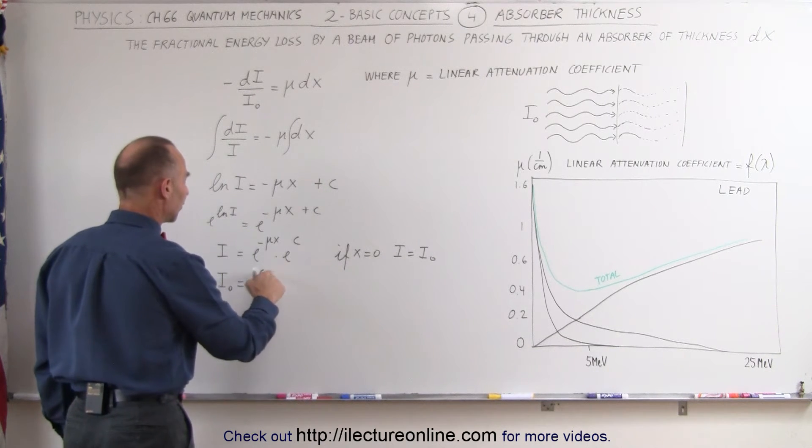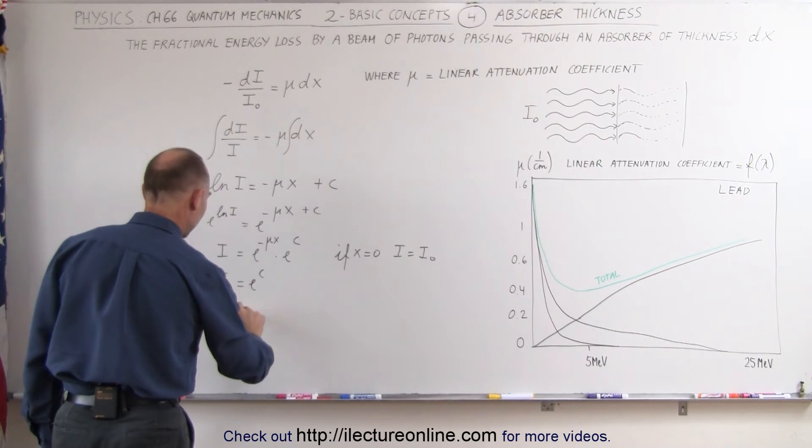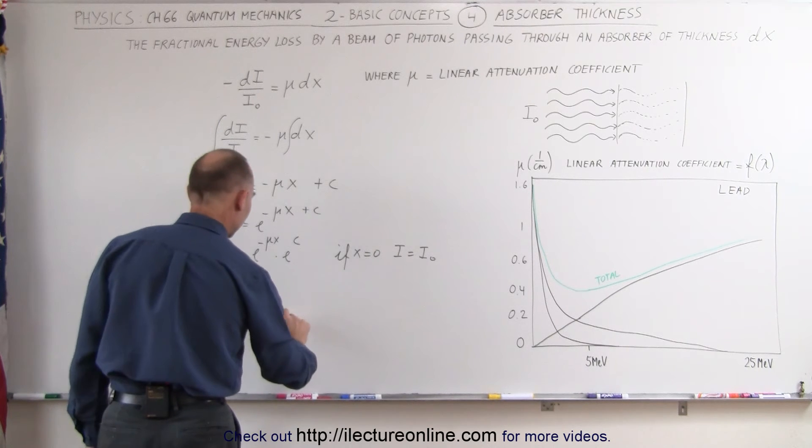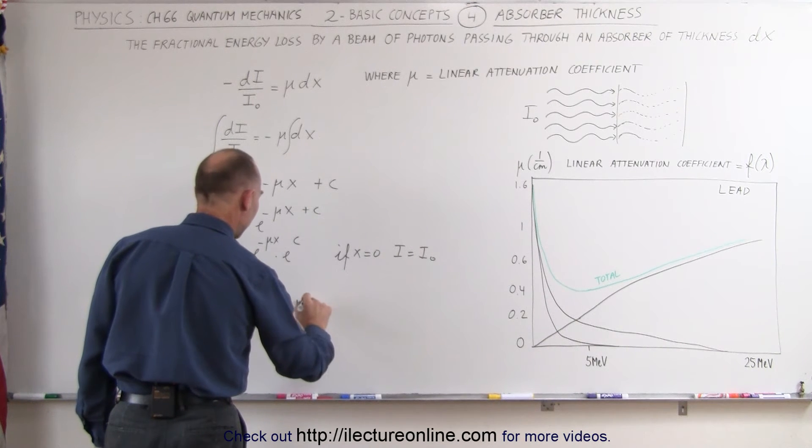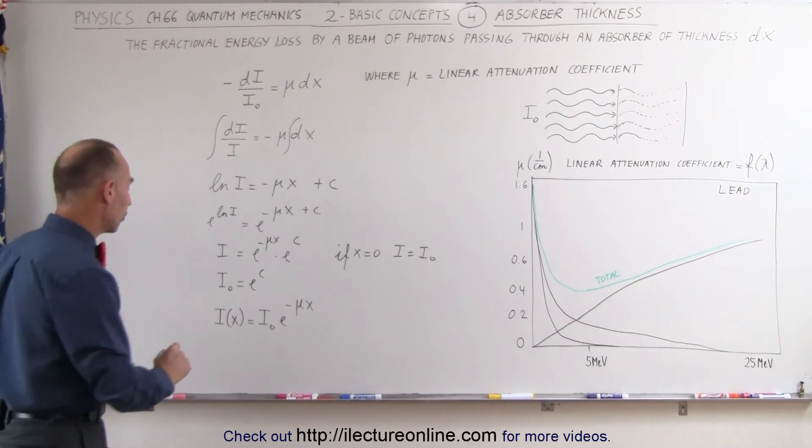And that can then be replaced by I sub naught. The final equation becomes that the intensity as a function of thickness is equal to I sub naught, the initial intensity, times e to the minus μ times x, x being the thickness of the material, and μ being the linear attenuation coefficient.